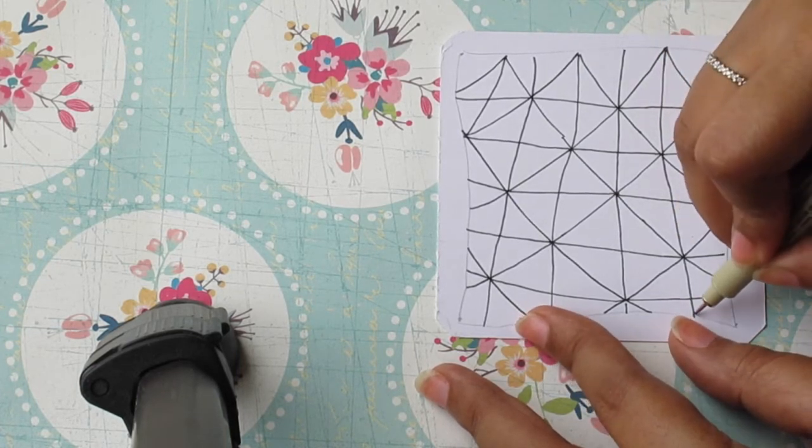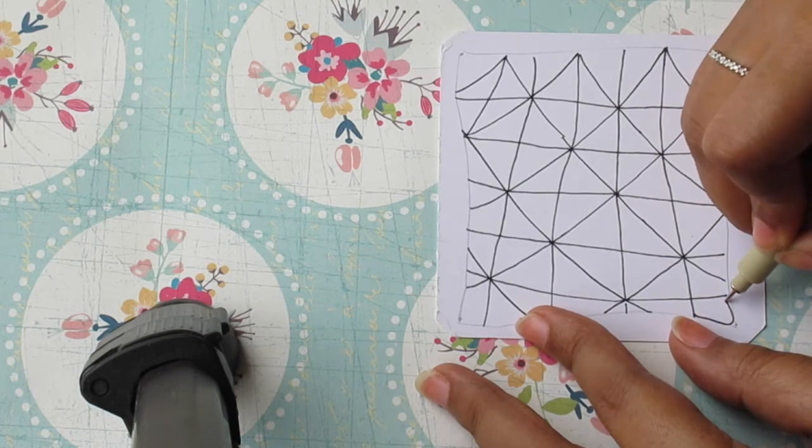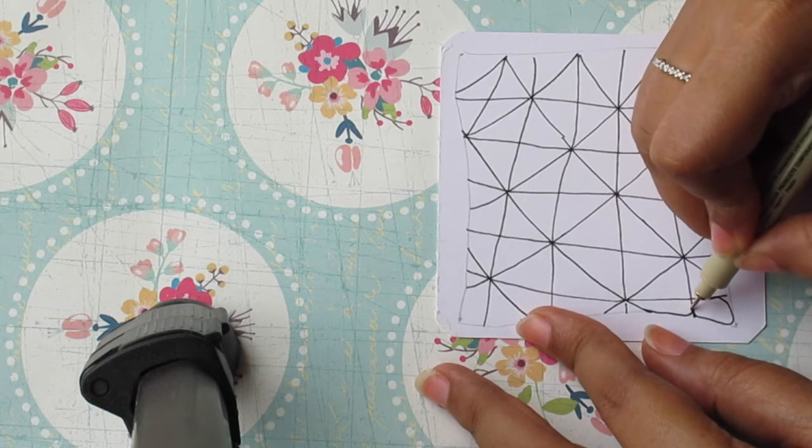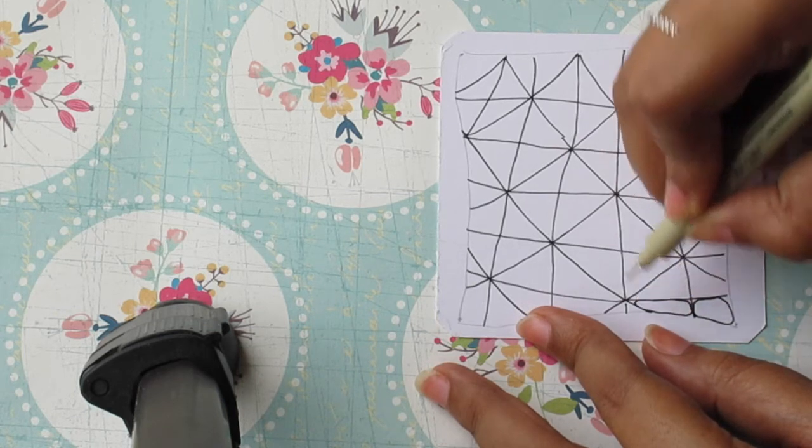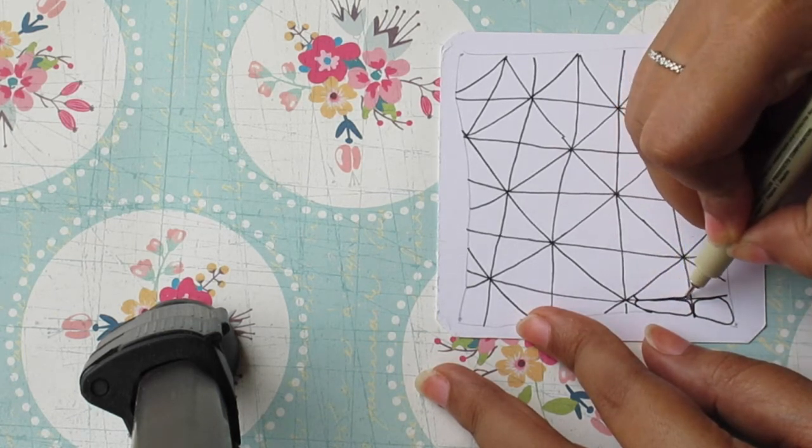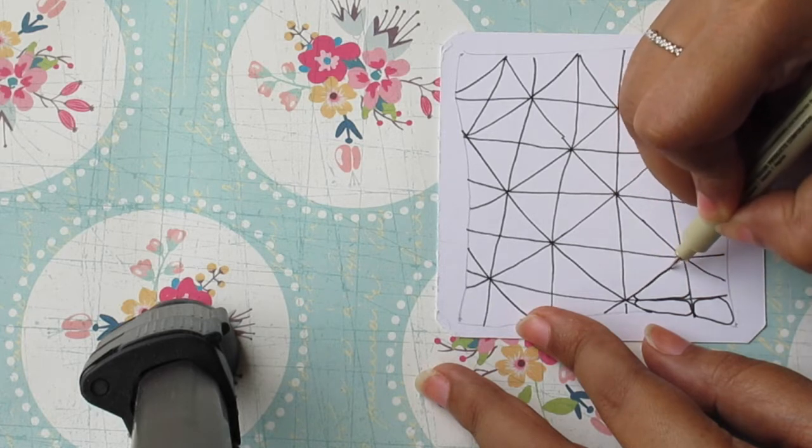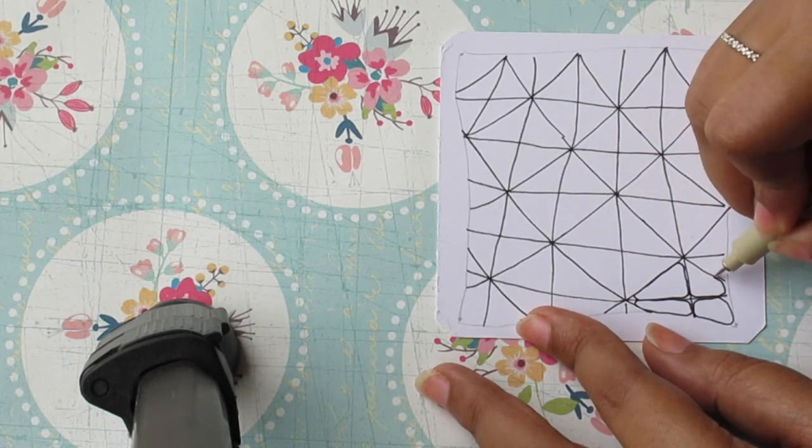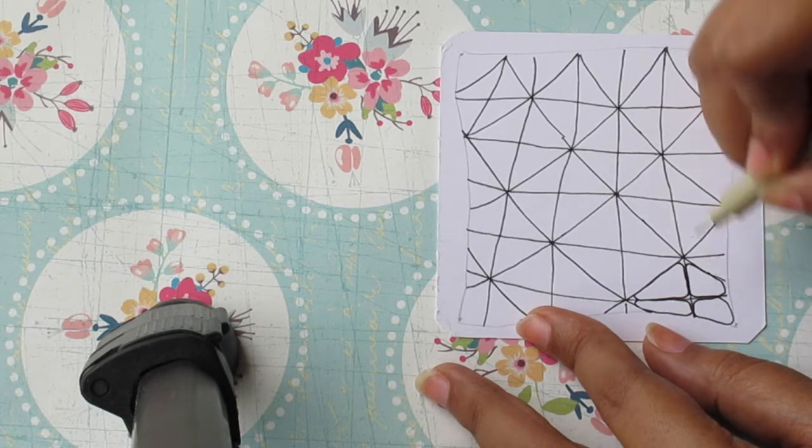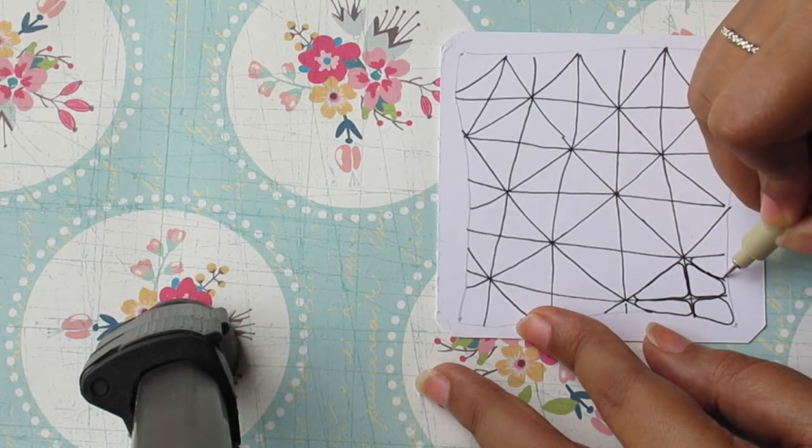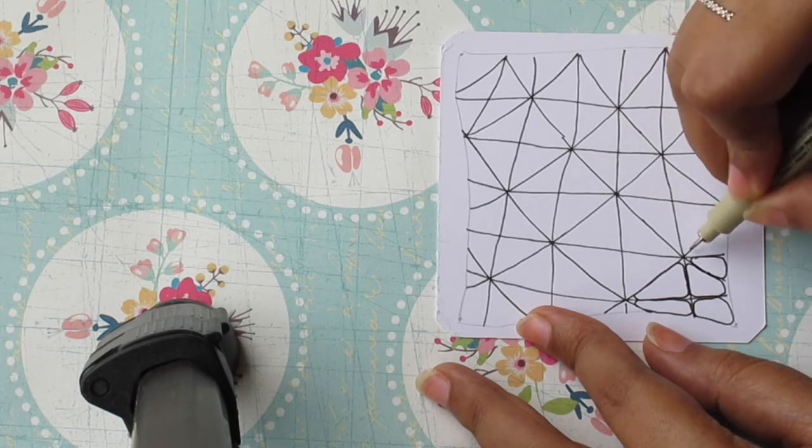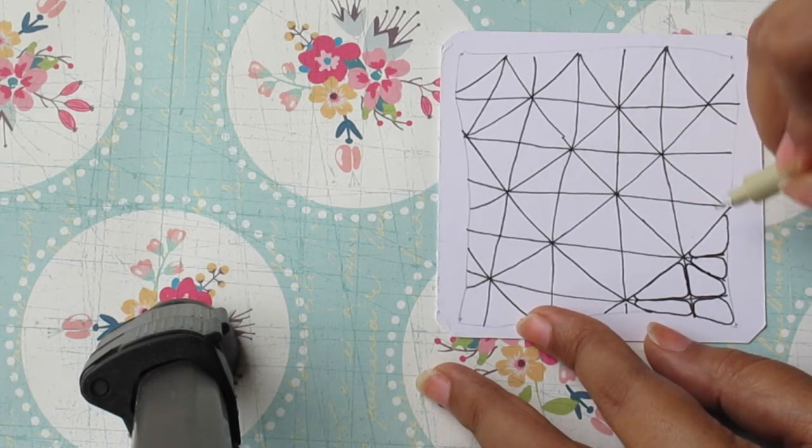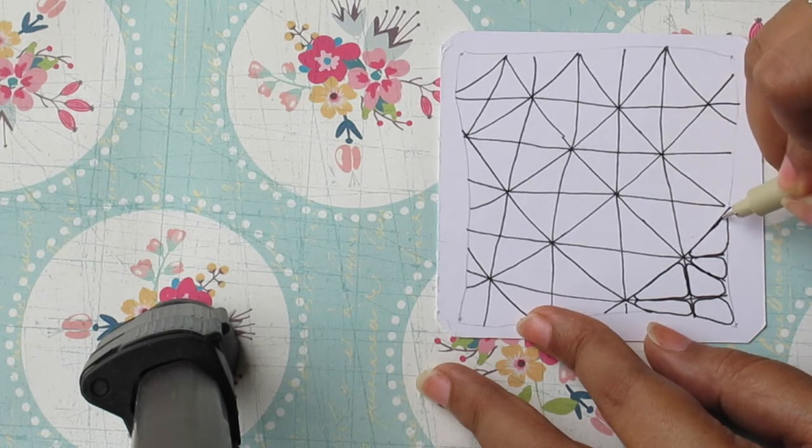And now for each of the triangles that we've created we are going to make triangles inside with rounded edges. So wherever the corners of these triangles are there we are going to create round edges over there.